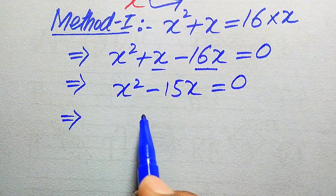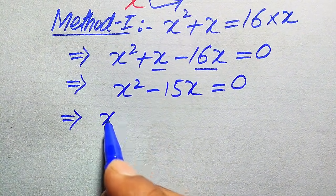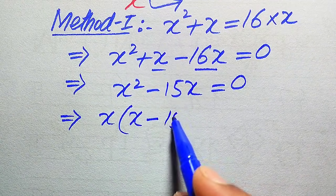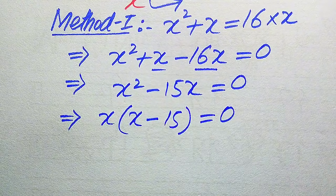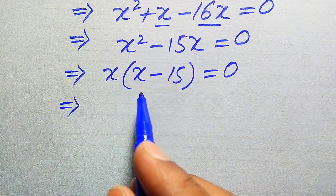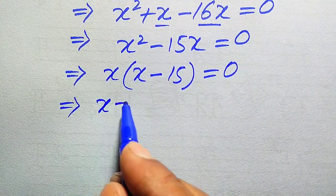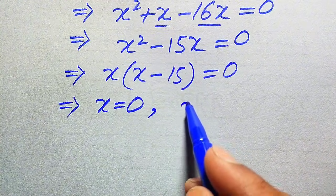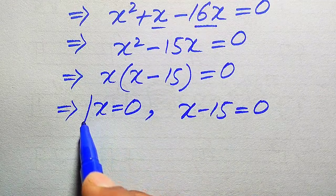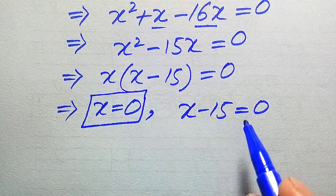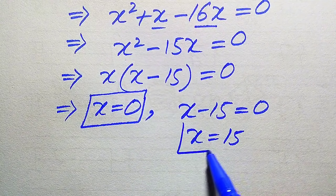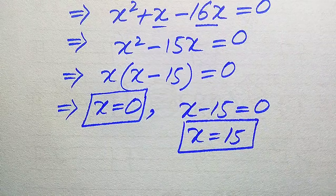We factor out x from the equation, giving us x times (x minus 15) equals 0. This splits into two cases: the first case gives x equals 0, and the second case gives x minus 15 equals 0, so x equals 15. These are the two roots of the equation.